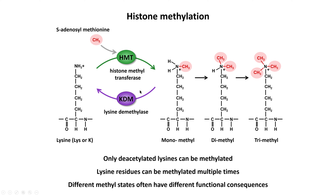The demethylases will similarly be mono-, di-, or tri-demethylases. We therefore have many enzymes and many specific lysine methylation states. It's worth noting that only deacetylated lysines can be methylated — if there's an acetyl group, the methyltransferase is blocked. So acetylation and methylation of lysine are mutually exclusive.